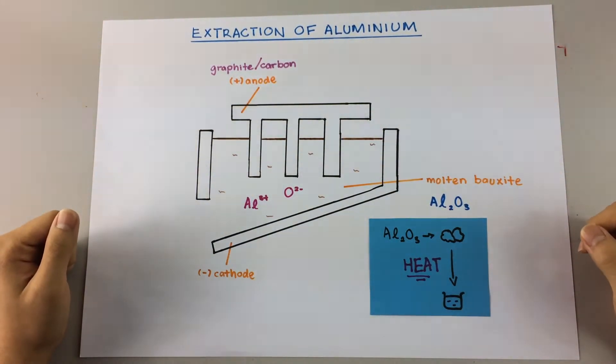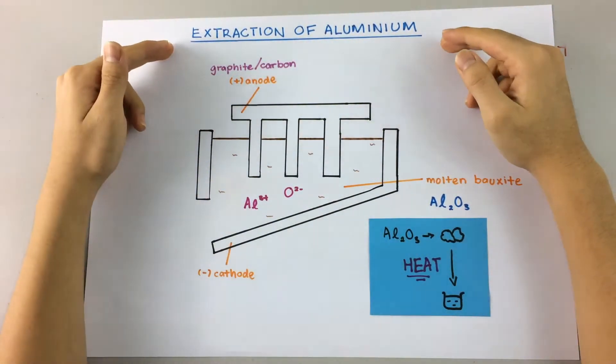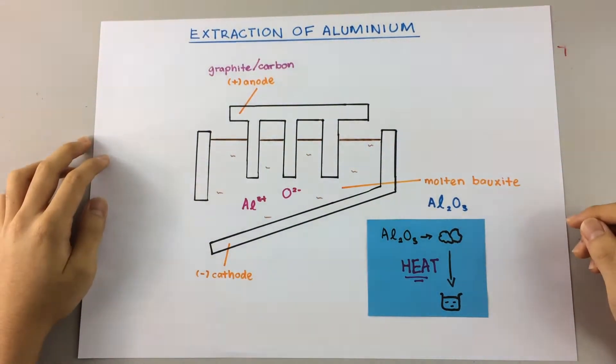Now, we're going to take a look at the extraction of aluminum. This process requires electrolysis, a concept which you should be familiar with by now.